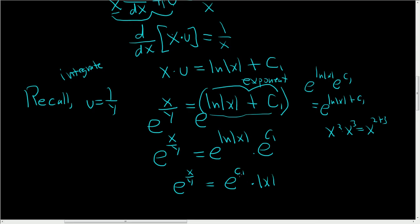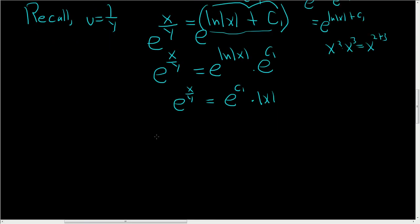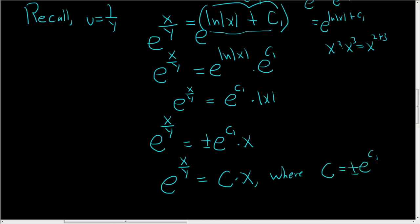Now we'll drop the absolute value. Here's the cool part. This is why I wanted to do it this way. So we get e to the x over y equals, well, the absolute value of x is positive x if x is greater than or equal to 0, and it's negative x if x is less than 0. So here we'll get a plus or minus e to the c1 times x. So we'll just call it c. So e to the x over y is equal to c times x, where c is equal to plus or minus e to the c1. And that's it.